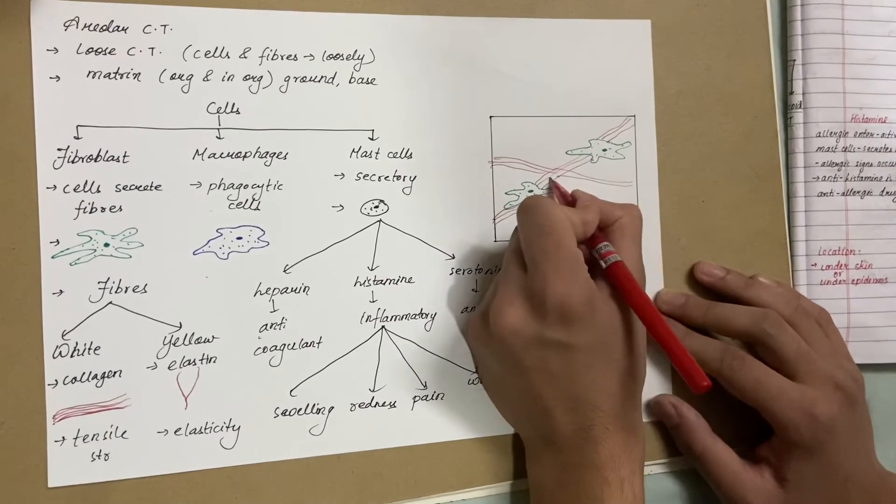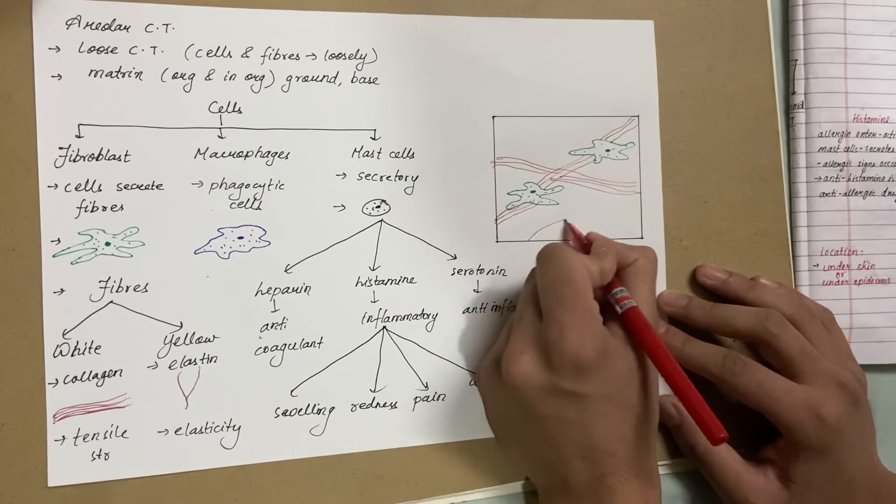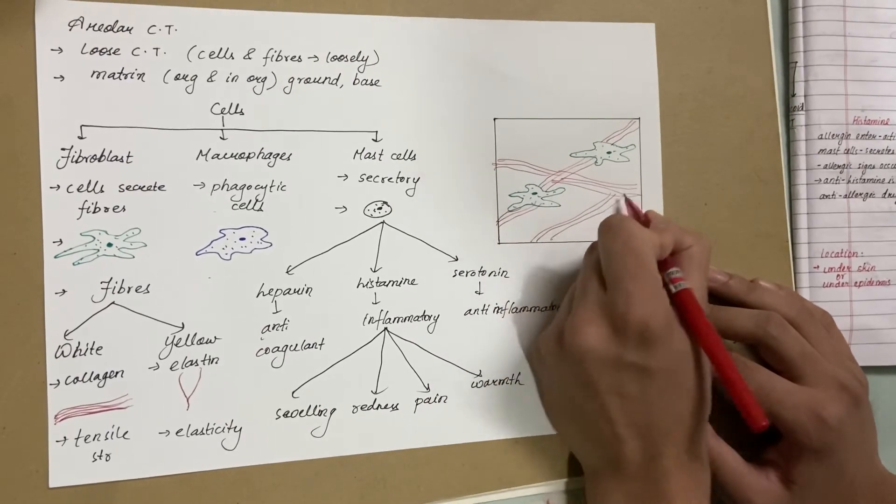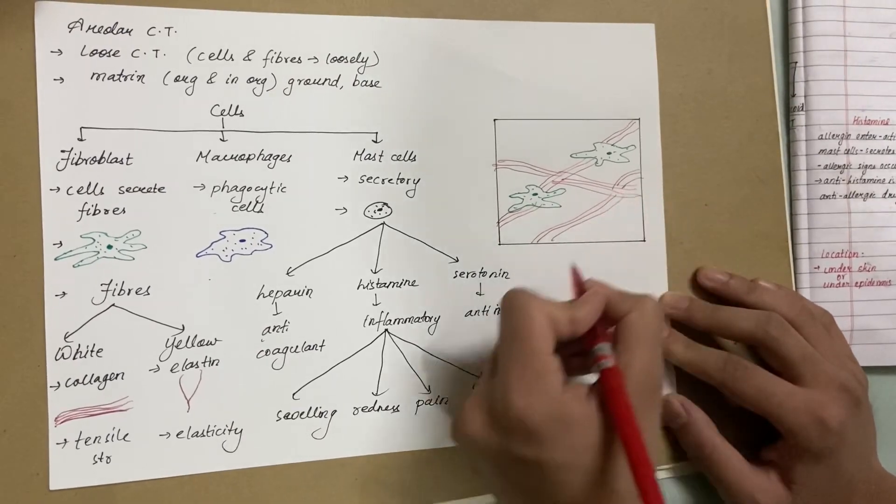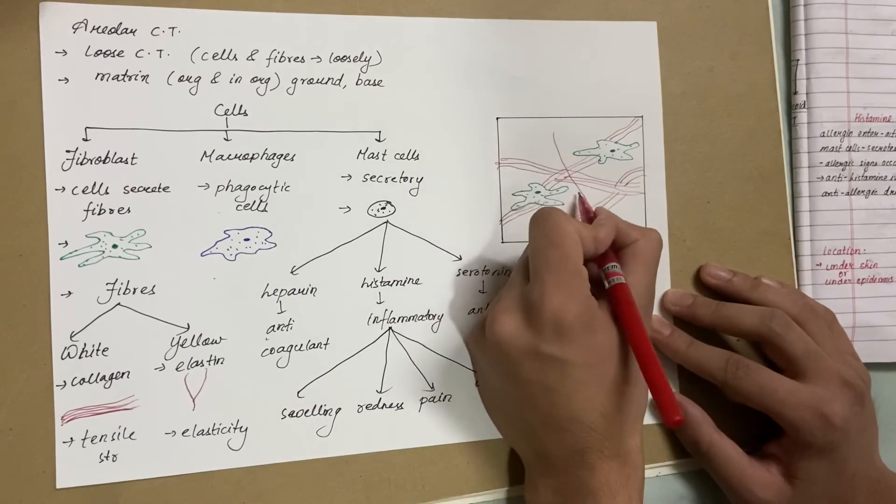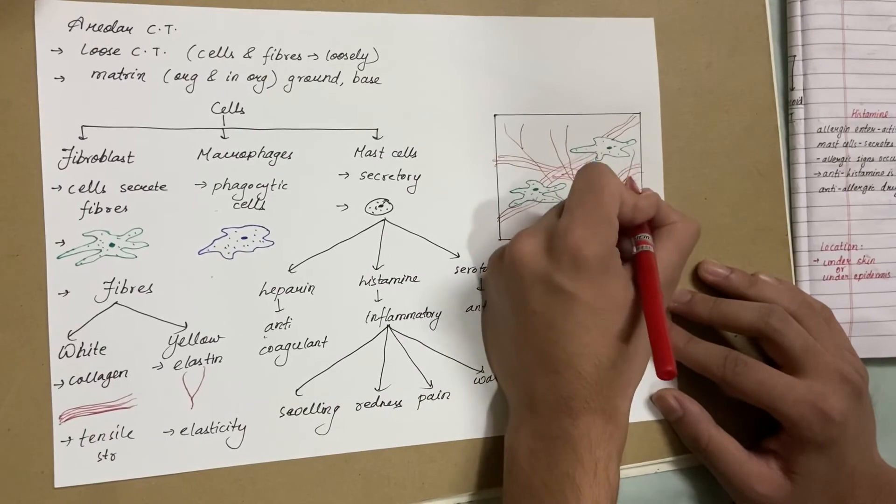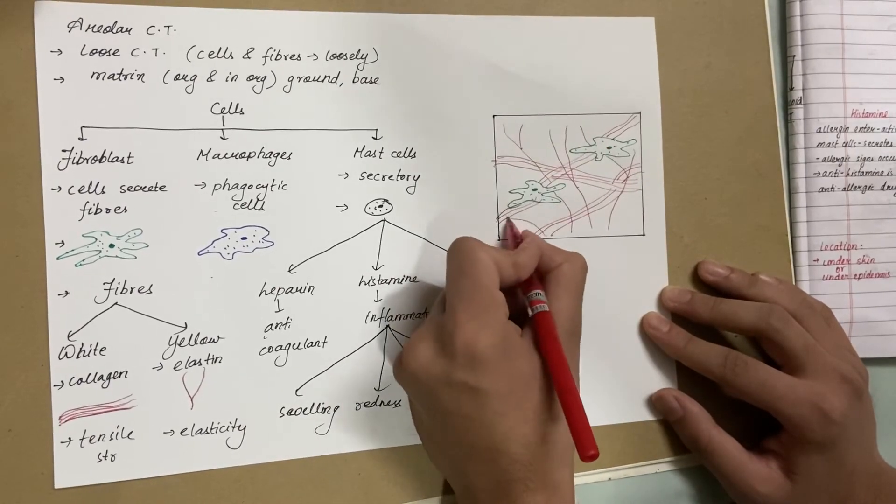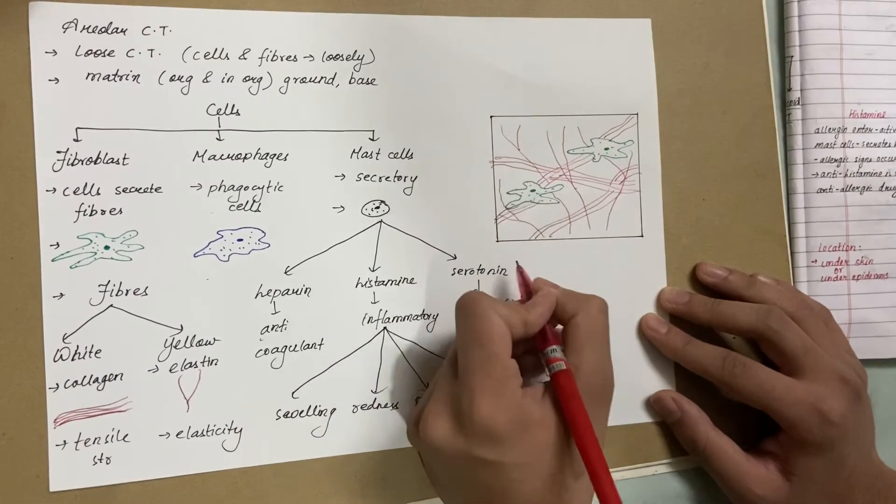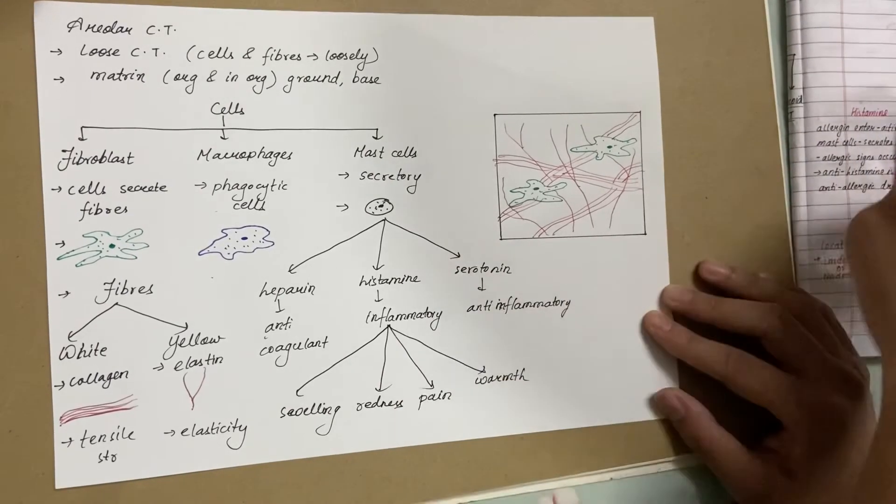They are formed of protein collagen that provides its whitish color. Then there's yellow fiber which is always found singly and is branched. It is formed of protein elastin, that's why it's yellow in color and that's where it gets its elasticity from.